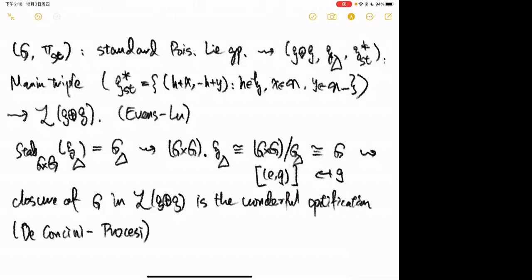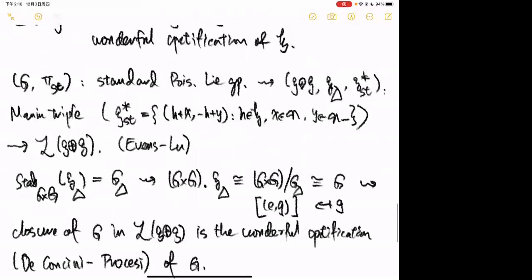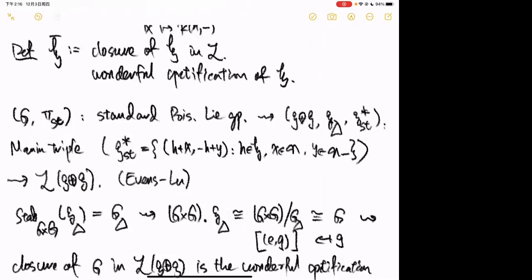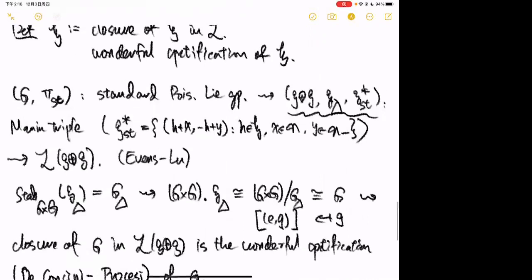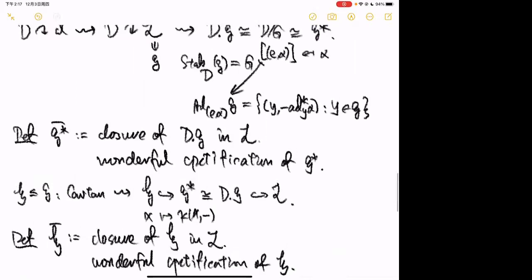Our construction of G*-bar is completely analogous to this construction — the only difference is that we replaced our Manin triple with this other Manin triple. In the study of G × G orbit closures in L(g ⊕ g), wonderful compactifications of semi-simple groups appear all the time. So to understand our L, it is important to first understand G*-bar.